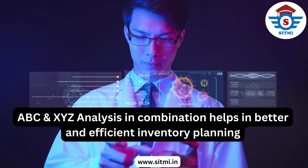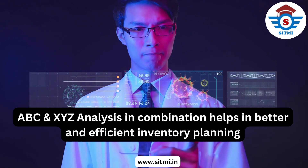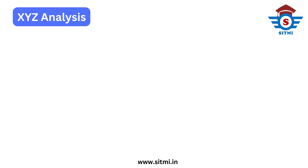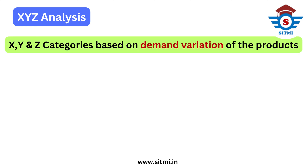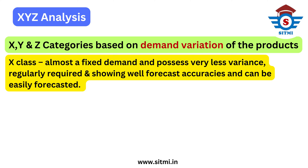In XYZ analysis, items are classified into three categories: X, Y, and Z. X category products are products which have almost a fixed demand and very less variation in their demand pattern. X class items are those products which are regularly required in a business with some up and down in quantities, but they are regularly required.